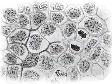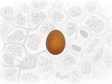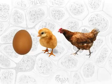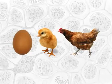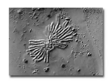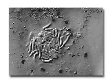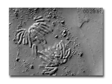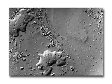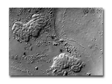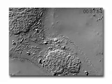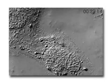Cell division is required for an organism to grow, mature, and maintain tissues. During the mitotic phase, a cell will undergo mitosis to form two new nuclei, and then divide to form two new individual cells during cytokinesis.